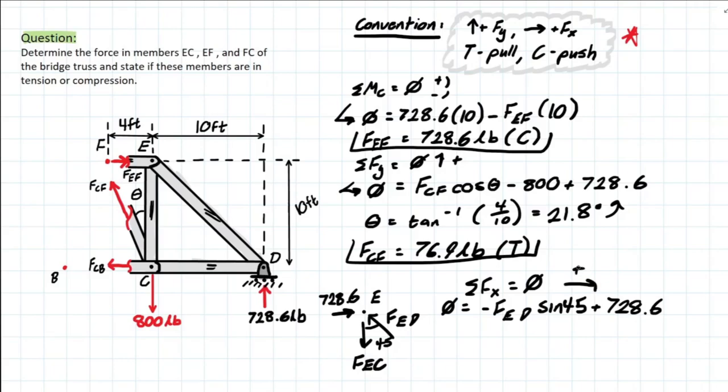Solving for FED, we are left with 1030.4 pounds. And that's compression, we're pushing that joint.